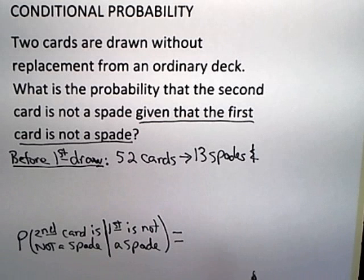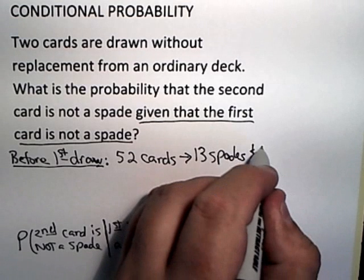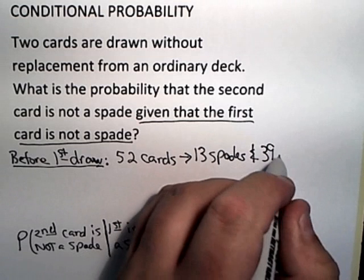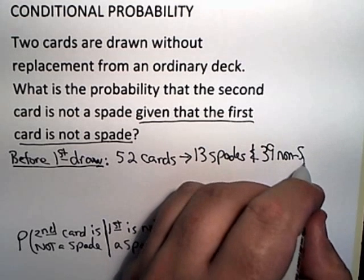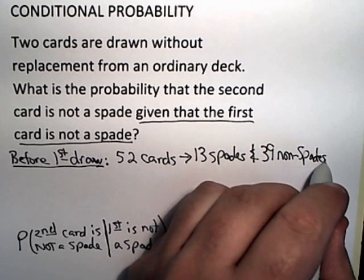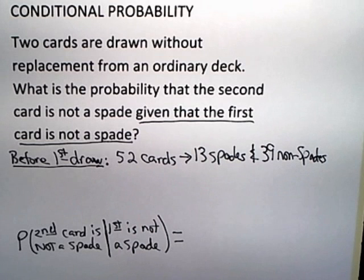There are 52 cards and 13 of them are spades. That means there were 39, and I'll just call them non-spades, things that were not spades. We don't care about further breaking that down. That's the sample space before the first draw.